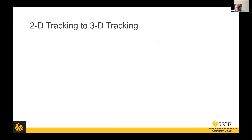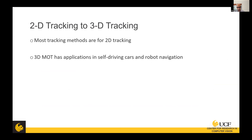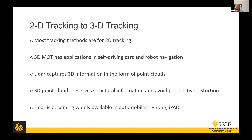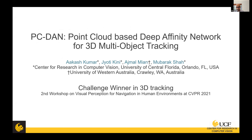Most of the work has been 2D tracking with regular RGB videos. What's becoming more important is 3D tracking, in the context of self-driving cars, robot navigation, and so on. LiDAR captures 3D information as point clouds, and 3D is better than 2D because it captures structural information without perspective distortion. LiDAR is now widely available — even on an iPhone or iPad. So we extended this work to 3D tracking, which we call PC-DANE — Point Cloud DANE.